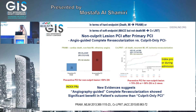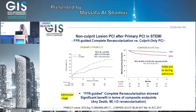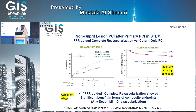We have two studies supporting that we can treat non-culprit lesions based on 50% stenosis angiographically. Using FFR in a staged procedure — as in NAMI-3 — significantly improved outcomes comparing FFR-guided versus angiogram-guided management. The Compare Acute trials, one from 2015 and one from 2017, one done at the index procedure and admission, and one done after admission, both showed significant reduction in death, MI, and ischemic-driven revascularization with the use of FFR.